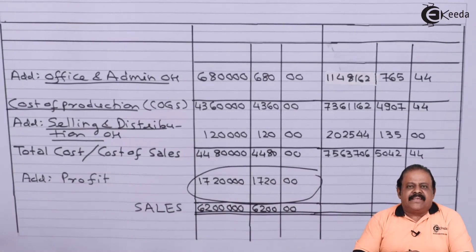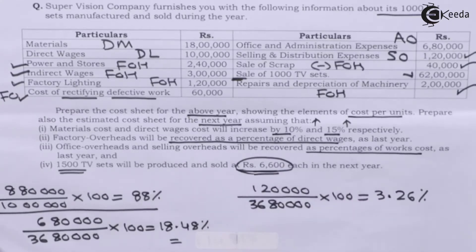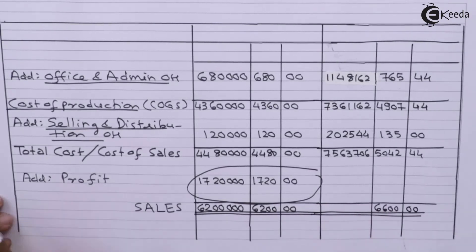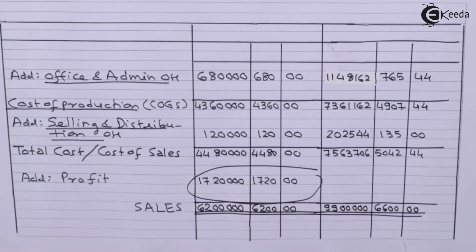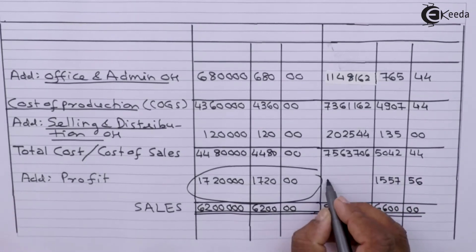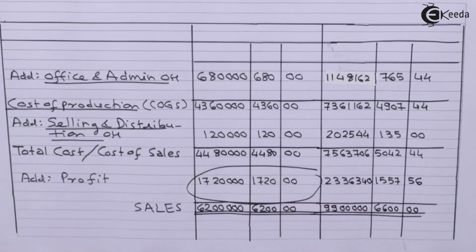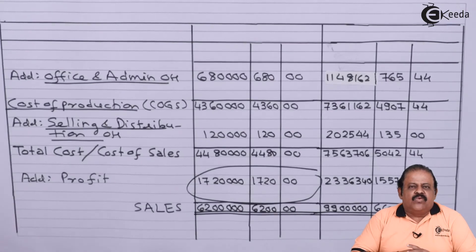Finally, we are required to record profit and sales. 1500 TV sets will be produced and sold at Rs. 6600 each in the next year. So total sales: 6600 multiplied by 1500 units gives 99 lakhs. We can now find out the profit — we got profit of 23 lakh 36,340, per unit it is Rs. 1,557.56. This is how we have learned to give effect to sale of scrap and cost of rectification work. Thanks for watching this video — stay in tune with Ikeda and subscribe to our channel.